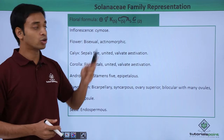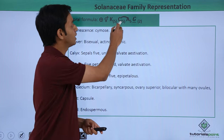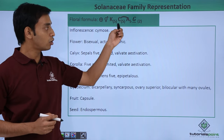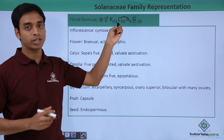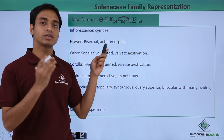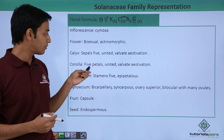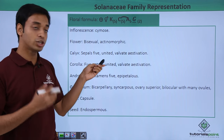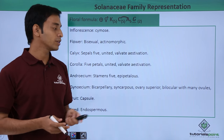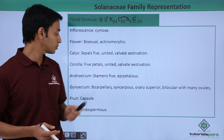Now let's see about the corolla. There are five petals which are also fused. So the corolla has five petals in united form, and they also follow the valvate type of aestivation.